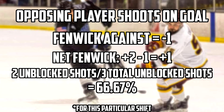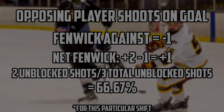But if on that same shift an opposing player fires a shot on player A's own goalie, then the Fenwick against would be minus 1, giving a net Fenwick rating of plus 1, or a fraction of 2 over 3, giving a Fenwick percentage of 66.67% for player A on that shift. Now just apply this thinking for every shift and every player on the ice for both sides, and you'll get the team Fenwick values.